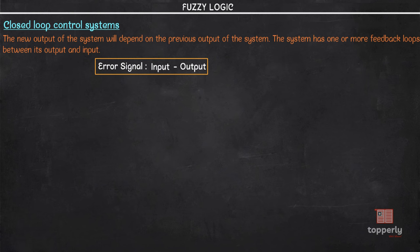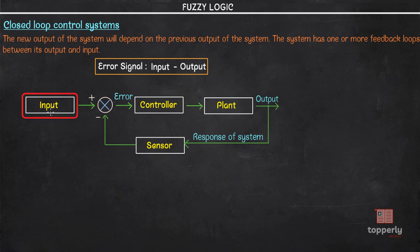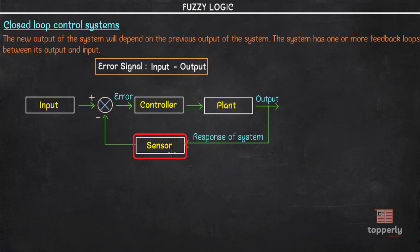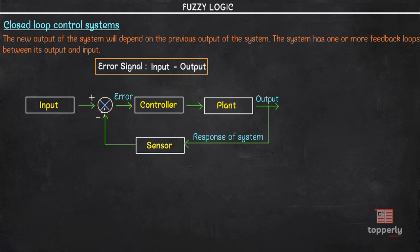In a closed loop control system block diagram, we have the input, the error signal which is the difference between input and output, a controller, a plant, and a sensor. The sensor measures the control signal. The plant is the physical system under control executing the control process. The output of the plant is adjusted with the help of the error signal — the difference between the actual response and the desired response. Feedback means the output is returned back as input.